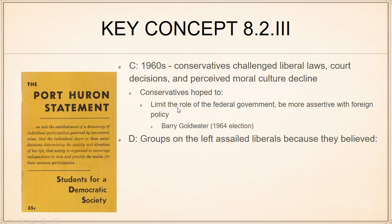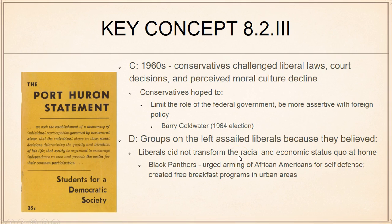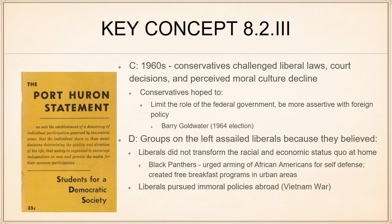Groups on the left are assailing liberals because they believed liberals are not doing enough. The Black Panthers are a good example — Martin Luther King's liberalism is not going far enough, so they argued for arming themselves and creating their own societies. The Black Panthers are often remembered for how they dressed and their advocacy of violence, but they were also creating free breakfast programs, daycares, and libraries in urban areas. The Black Panthers were trying to carve out black societies in America — that's pretty radical.